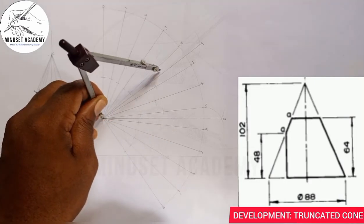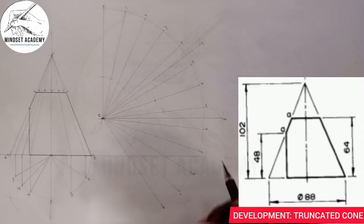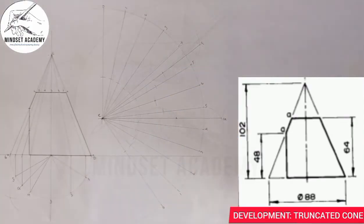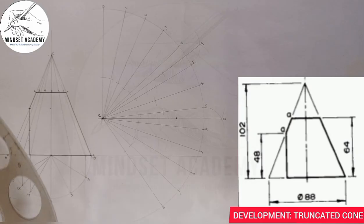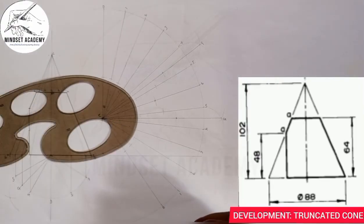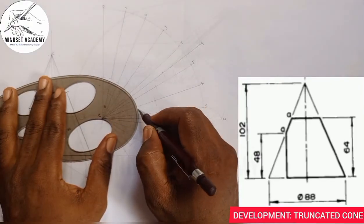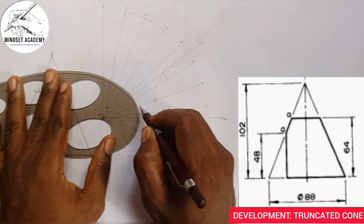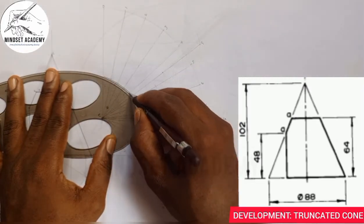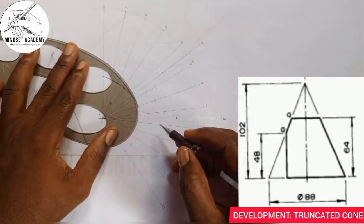This is what I'm targeting. I will now join these points using a French curve — from here I can easily join all these points together.